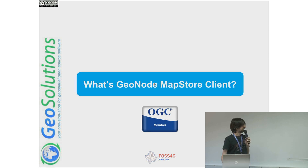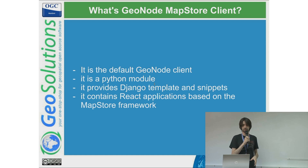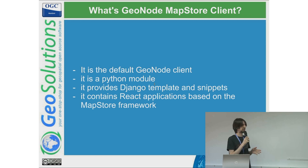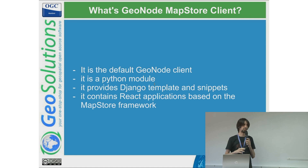So we introduced the GeoNode MapStore client. What is it? It's the default GeoNode client — when you install GeoNode you receive this module because it's inside GeoNode's requirements. It's a Python module that provides template snippets that will override the core ones. We are working to extend those; right now some pages are still in the core of GeoNode. The new GeoNode 4 MapStore focus is on the API v2, so we want the integration between client and server to work through API only. It contains the React applications built on top of the MapStore framework.